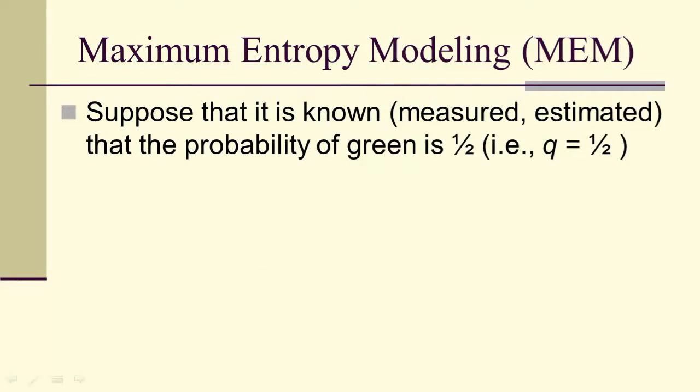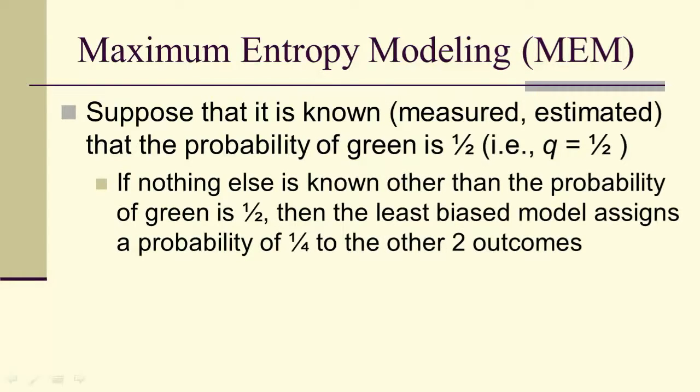So suppose that it's known—we've measured, estimated somehow, we figured out—that the probability of green is actually a half. In other words, q is equal to a half. Then if all we know is that the probability of green is a half, then intuitively we know that the least biased model assigns a fourth as the probability to the other outcomes.